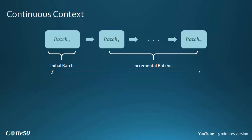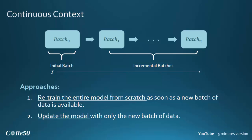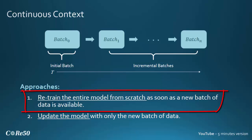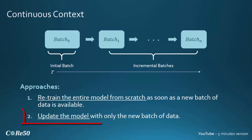Now how can we use this dataset? We put ourselves in this kind of context: we don't have a fixed dataset or task decided a priori, but we have an initial batch zero, and then only over time do we encounter a number of different incremental batches. To address this context we have two major approaches. The first is to just retrain the model from scratch as soon as a new batch of data is available — this is called a cumulative strategy because we need to keep in memory all the data from previous time steps. The second, the actual continuous learning strategy, is to update the model with only the new batch of data, so that at each time step after the update we can discard the data. This is much more efficient in terms of computational power and storage, but we risk forgetting what we have previously learned.